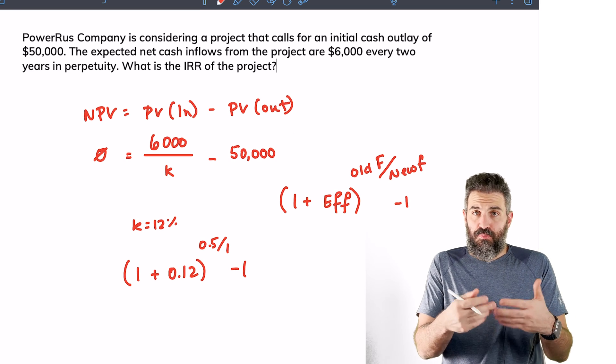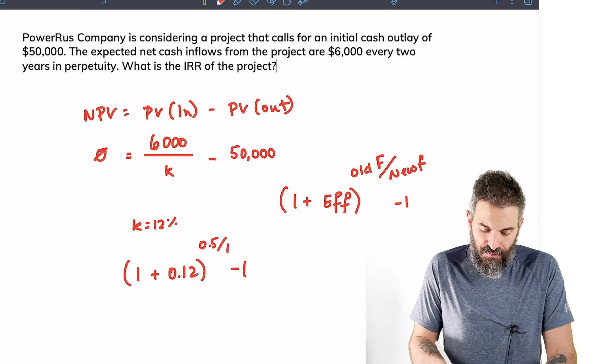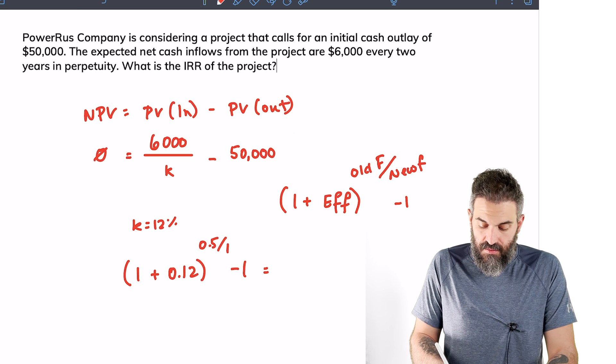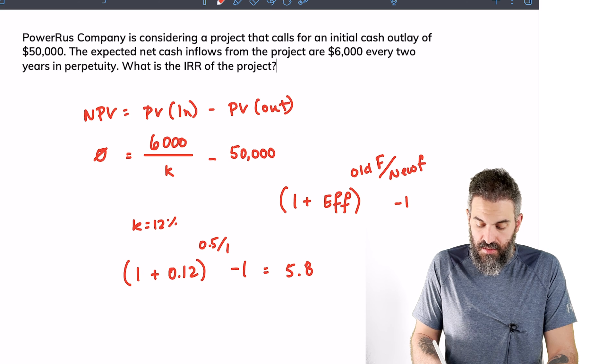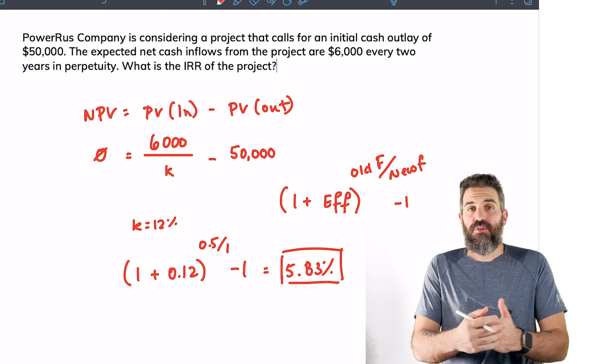You punch this into your calculator and you're going to get about 5.83%. So this is your effective annual rate and your internal rate of return.